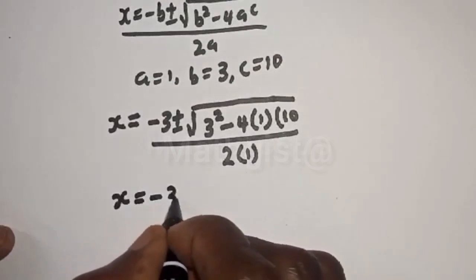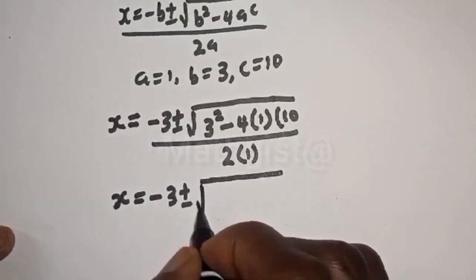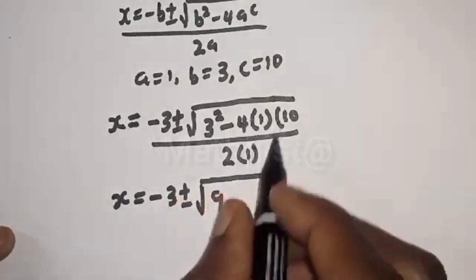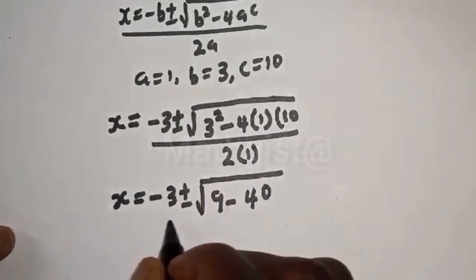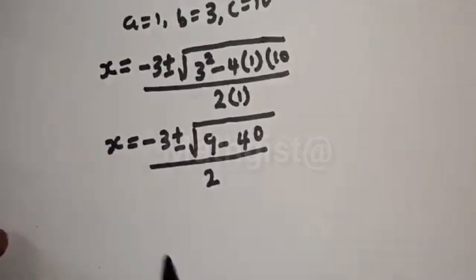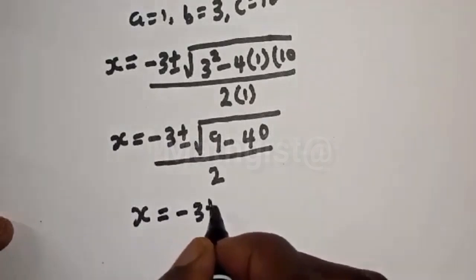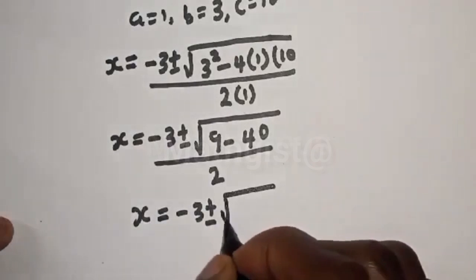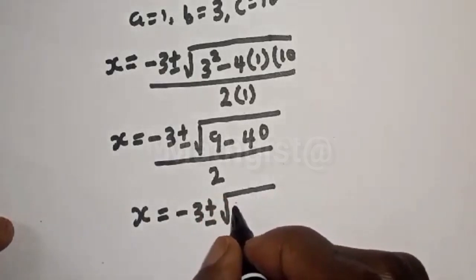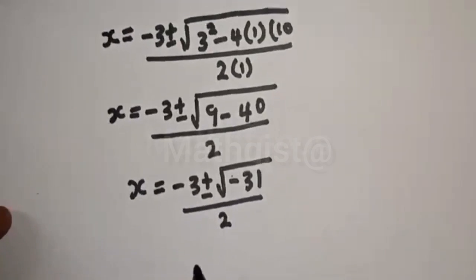s = (−3 ± √(9 − 40)) / 2. That is (−3 ± √(−31)) / 2.